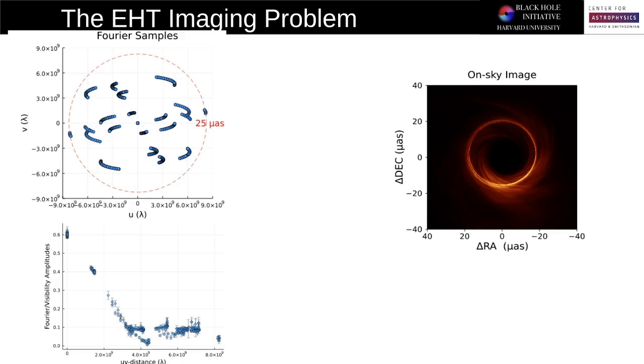So what makes the EHT imaging problem overall, the VLBI imaging problem difficult? Well, it's the fact that there is no unique image that corresponds to the same Fourier transform. This impacts us in a few ways.